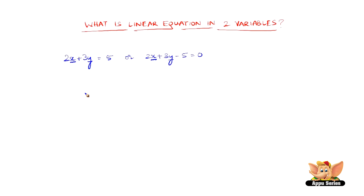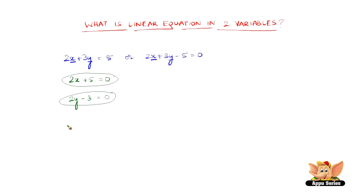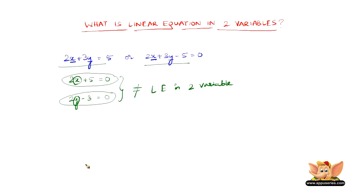Now, what is not a linear equation in two variables? Consider 2x plus 5 equal to 0, or 2y minus 3 equal to 0. These two equations are linear equations, but they are not linear equations in two variables because they have just one variable — x in the first and y in the second.